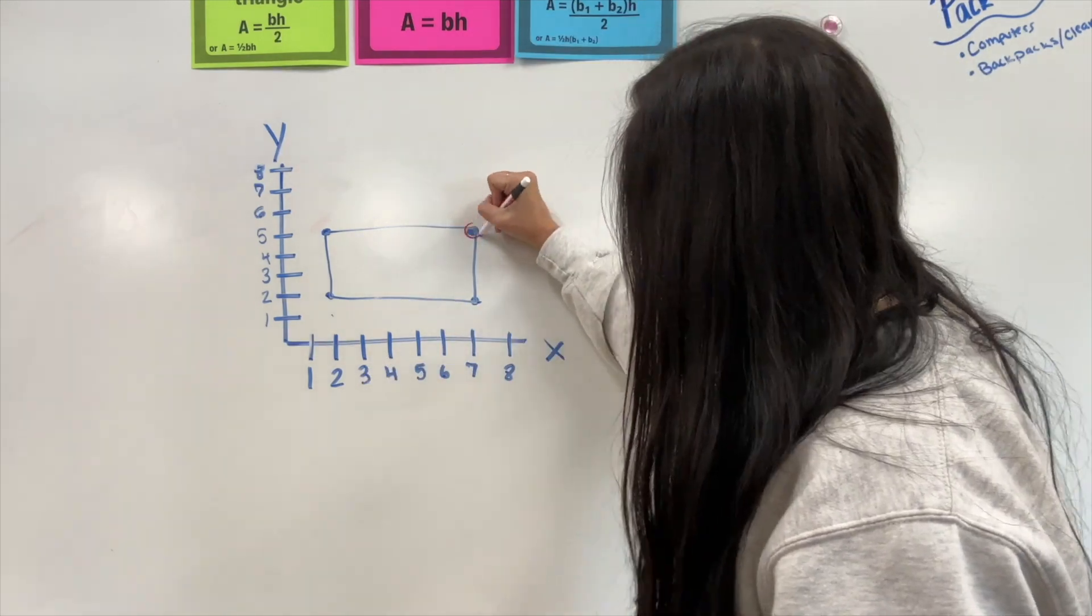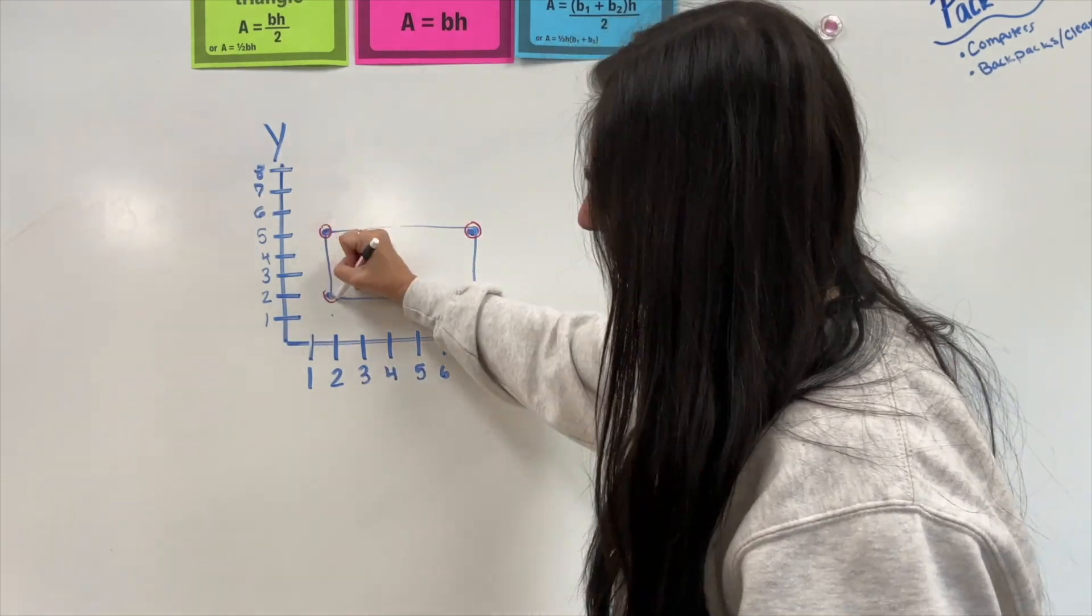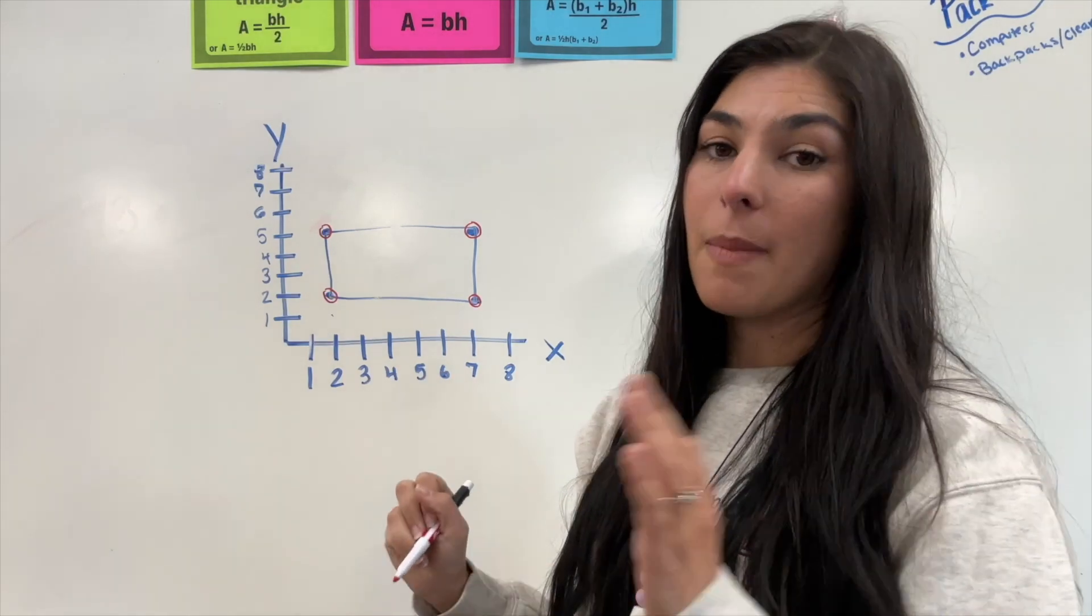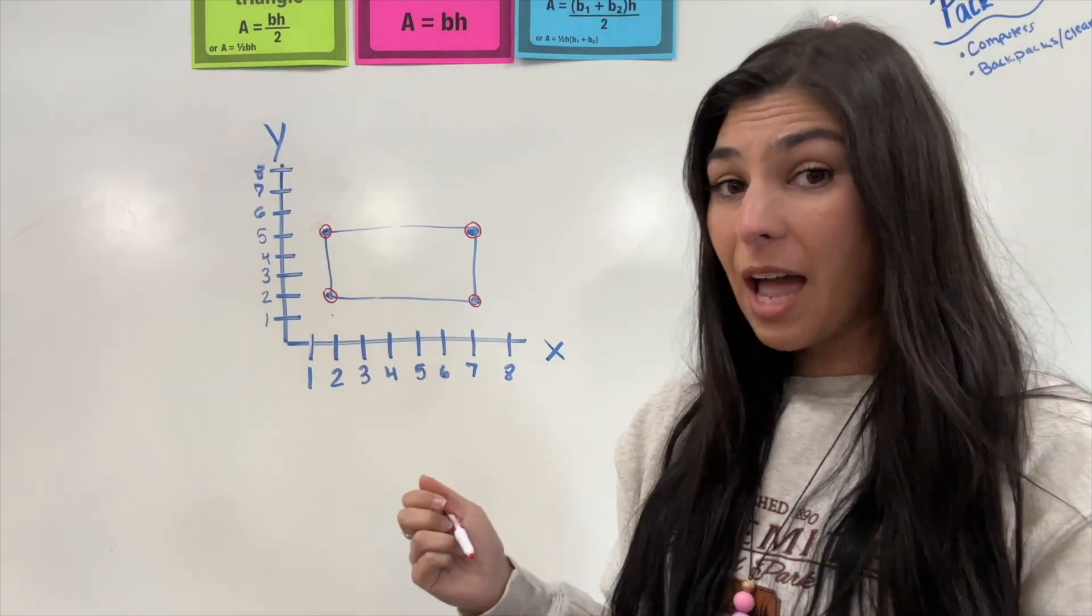Our vertices here, 1, 2, 3, 4. But in this case, we're going to label them A, B, C, and D. And they're each going to have their own coordinates.